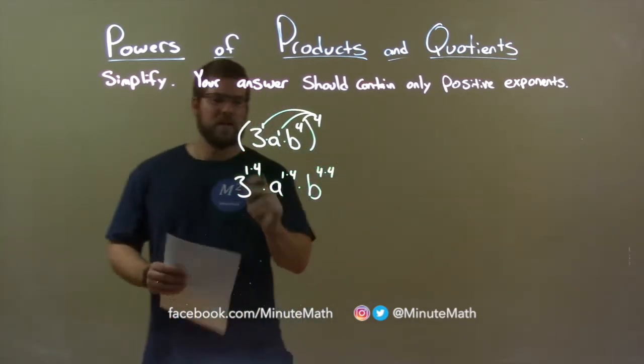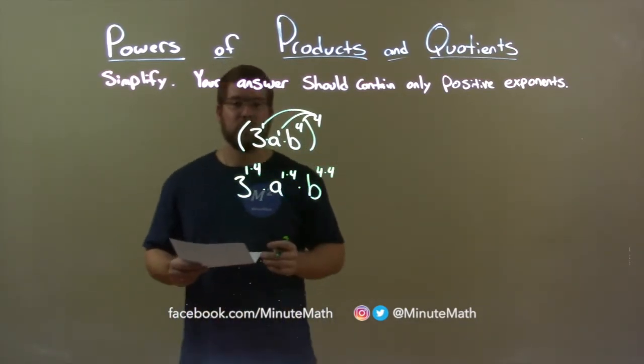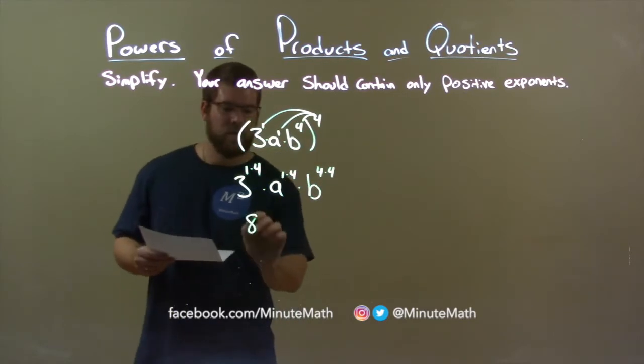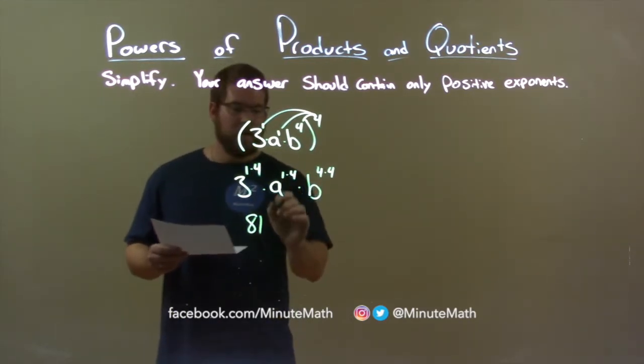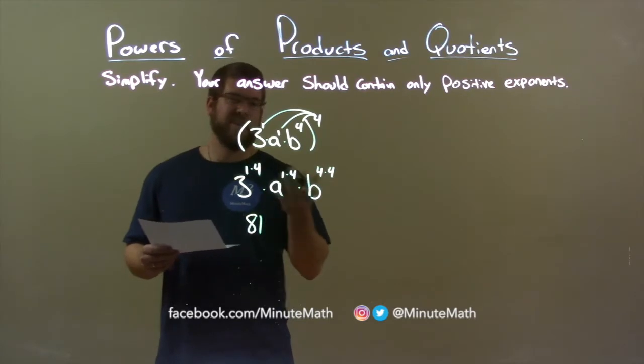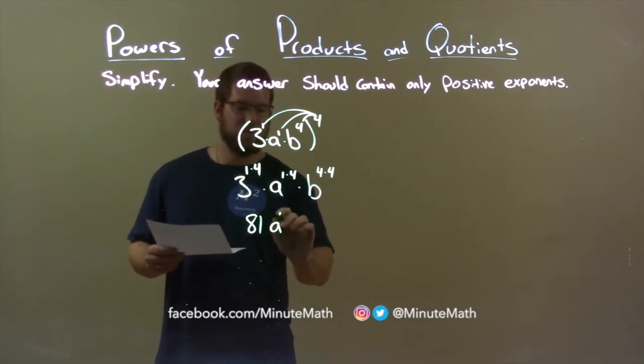So, let's simplify. 1 times 4 is 4, and 3 to the 4th power is 81. A comes down, and it's 1 times 4, so that's 4, and it's just a to the 4th power.